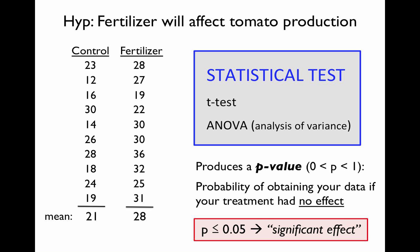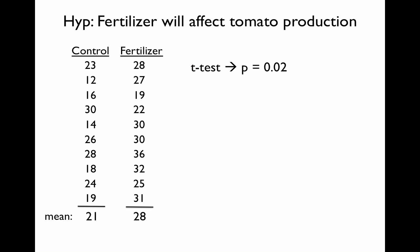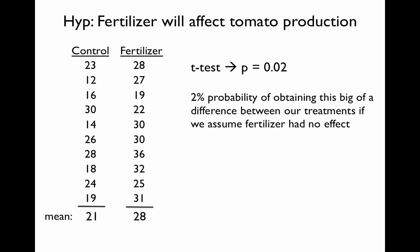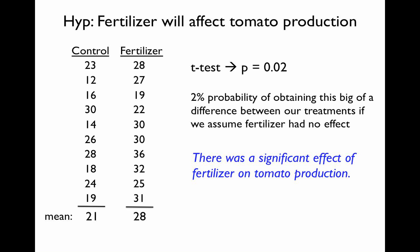We run a statistical test on our data. Because we only have two treatments, we use a t-test. When we do that, we end up with a p-value of 0.02. This means there's only a 2% probability of obtaining this big a difference between our treatments if fertilizer did not have an effect. Since this probability is so small — less than 0.05 — it's much more likely that fertilizer did have an effect on tomato production, and we can conclude that there was a significant effect of fertilizer on tomato production. Since this matches our hypothesis — that fertilizer will have an effect on tomato production — and we got a p-value of less than 0.05, we can conclude that our data support our hypothesis.